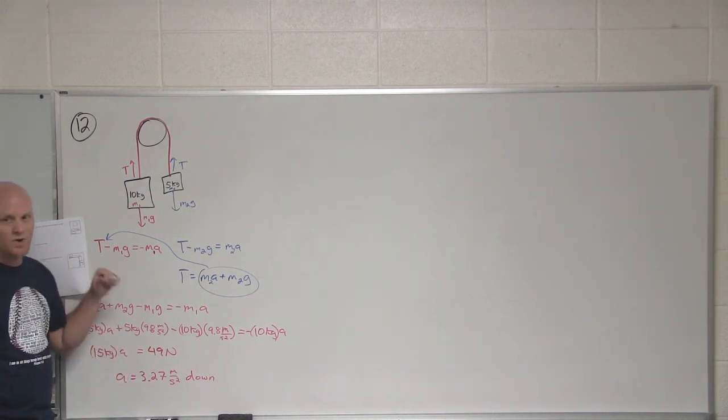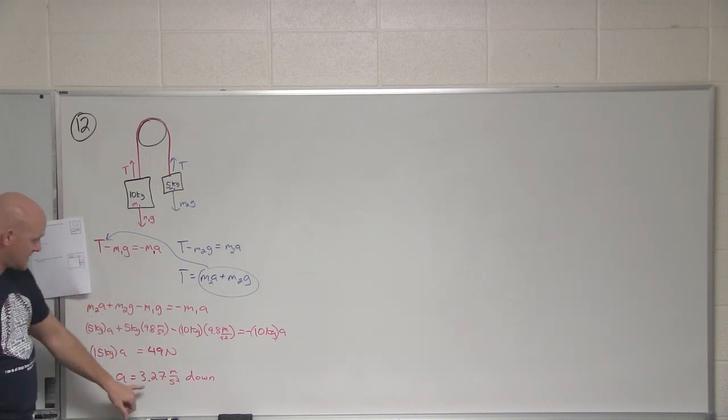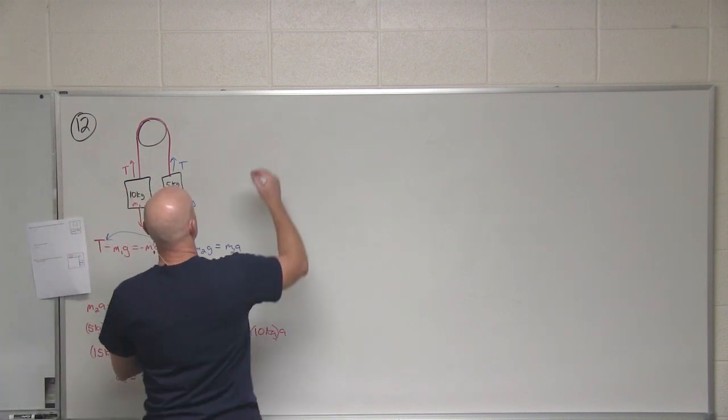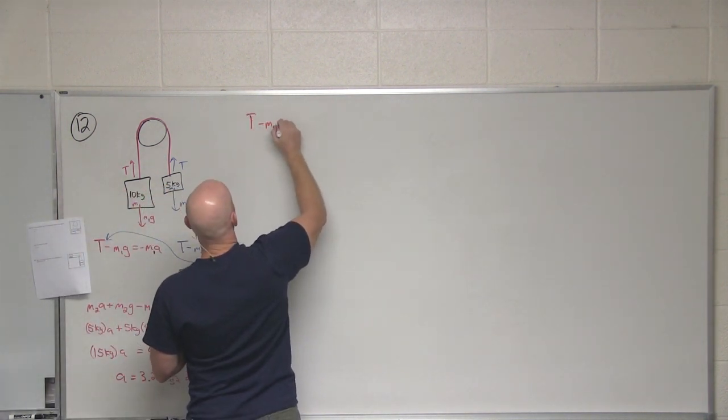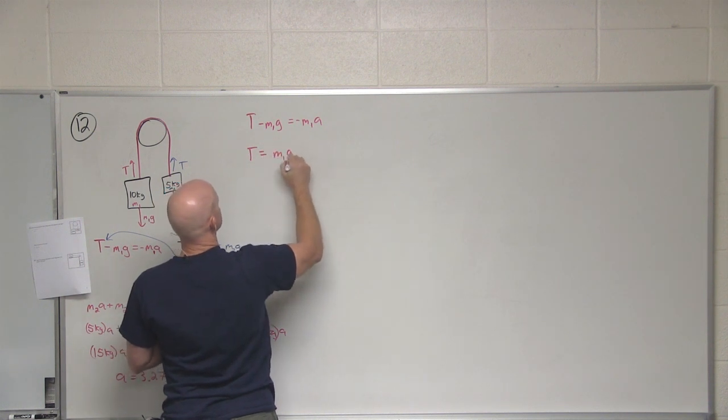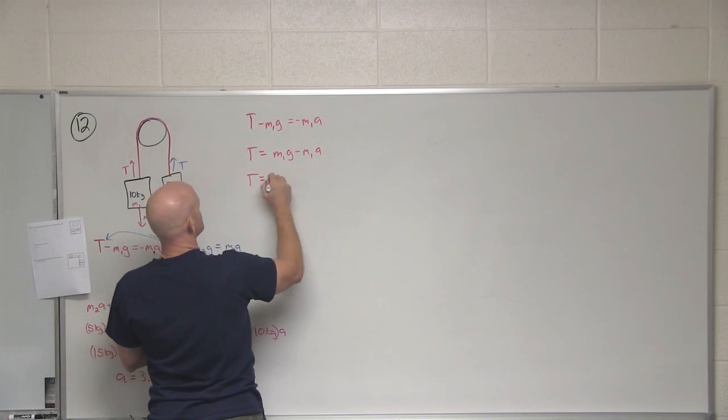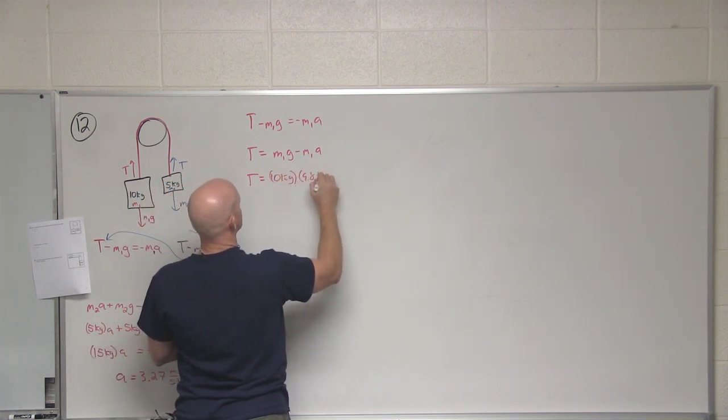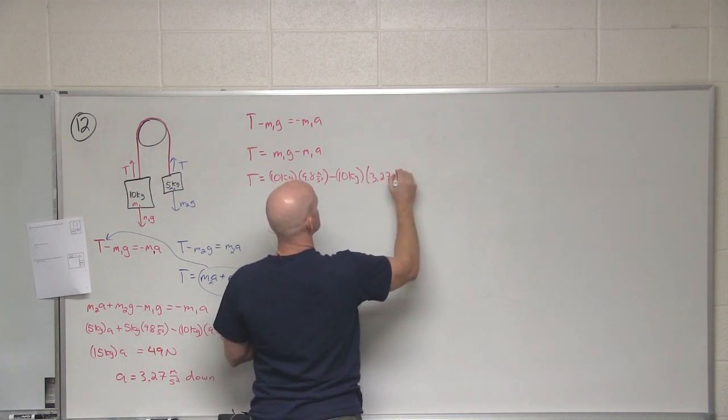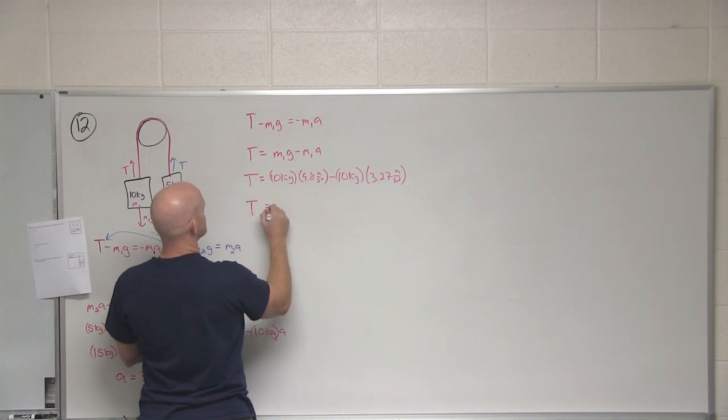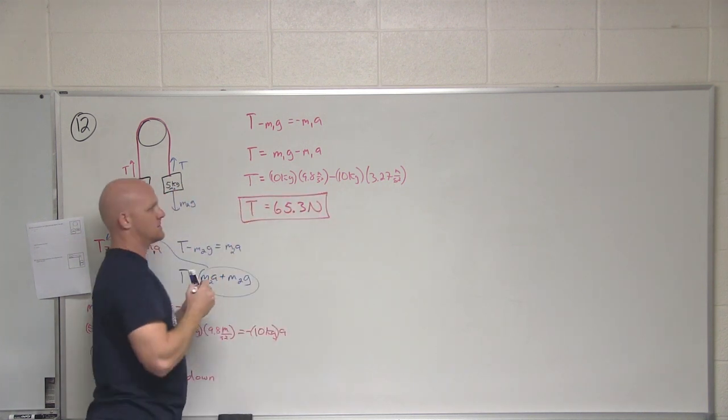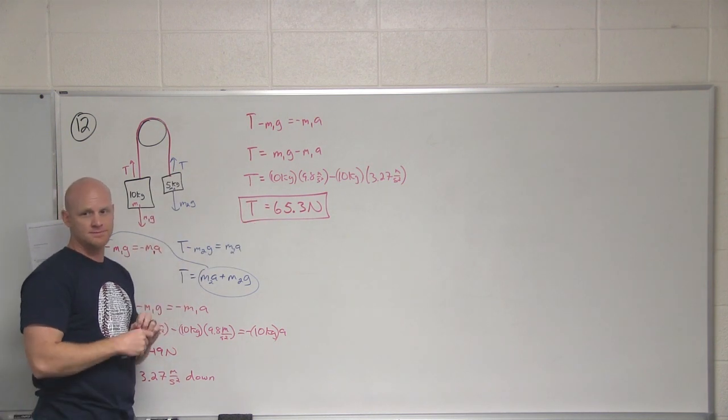Alright. Second half of this problem says, what is the tension in the rope? How am I going to solve for the tension in the rope now? Yeah. I'm just going to take this acceleration and plug it back into either one of these original equations. Since we've been dealing with this one a lot, I'll plug it right back in there. And so in this case, I'll just carry that back over. So T minus m1g equals negative m1a. So T equals m1g minus m1a. T equals 10 kilograms times 9.8 minus 10 kilograms times our new 3.27 meters per second squared. Somebody get me a tension. Good. 65.3 newtons. And if I solved it for the other rope, it would also come out to 65.3 newtons.